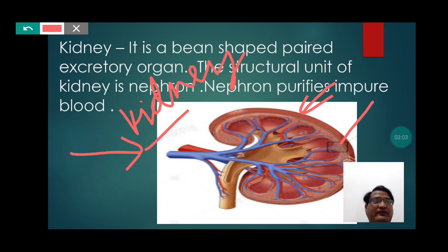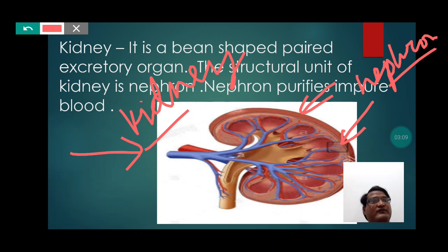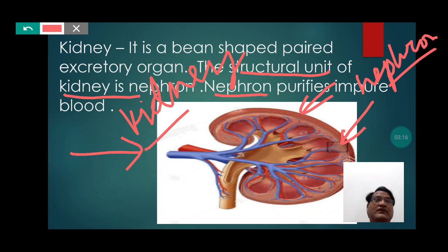Here in this picture it is the diagram of the kidney. If you concentrate, you can also notice the nephrons here. Nephrons form the structural unit of the kidney because a huge number of nephrons are present in the kidney.